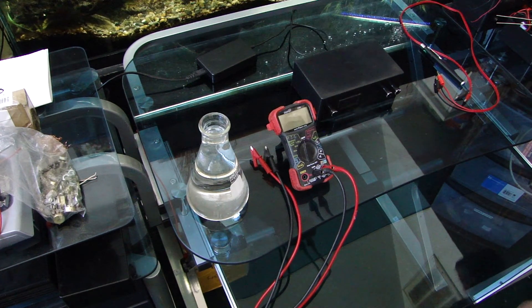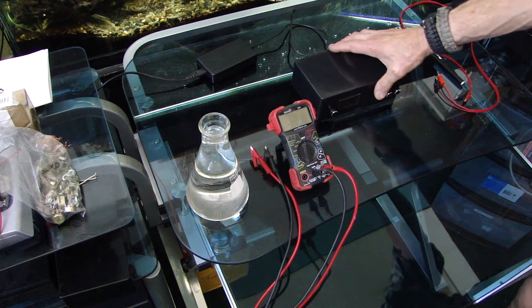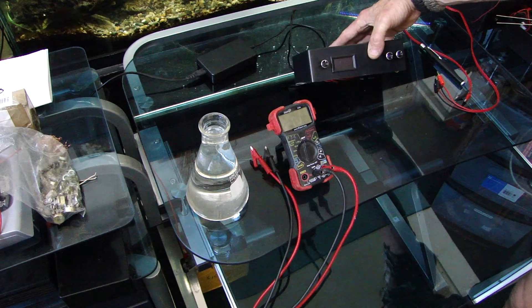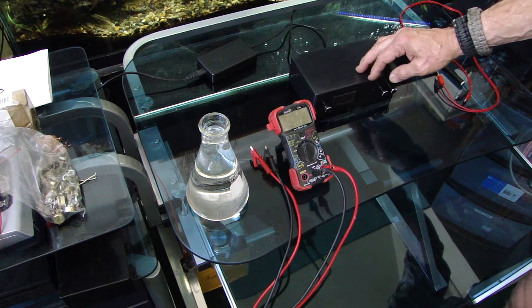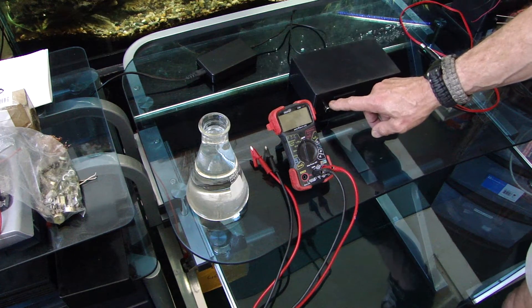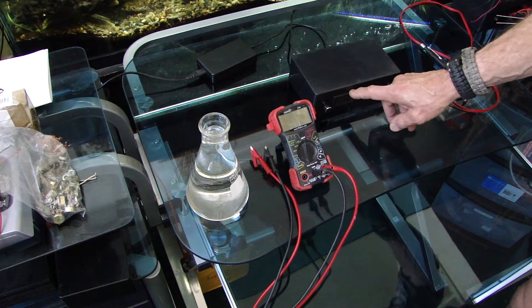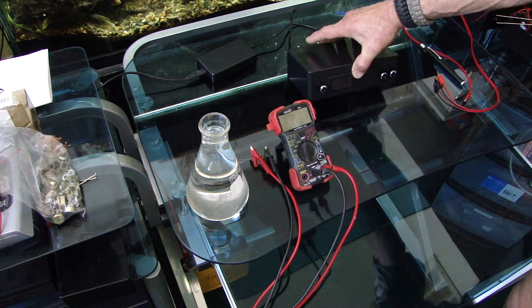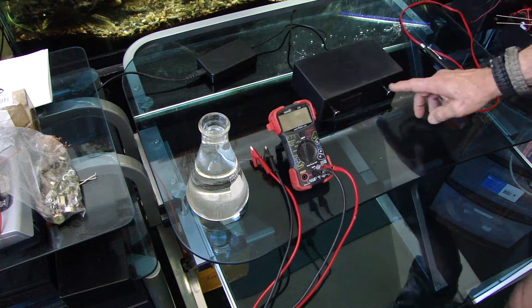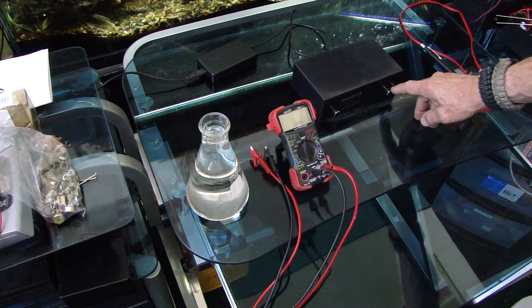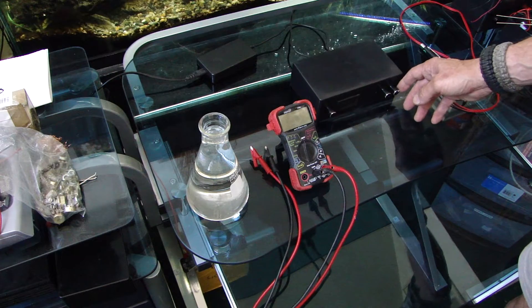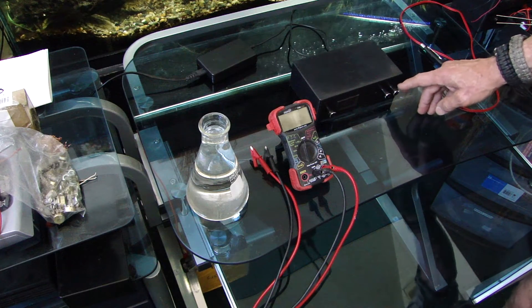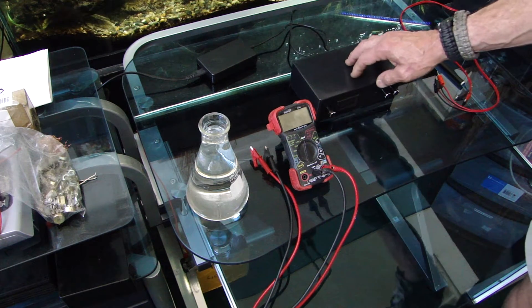Hello, today we're going to talk about the colloidal silver generator. This is my latest one. This has the adjustable limiter current. It'll show up on the amp meter. It's a precision amp meter. This is for the reverse polarity cycle, and you can adjust that from 1 to 30 seconds. And then we have the stir speed for the built-in magnetic stir.